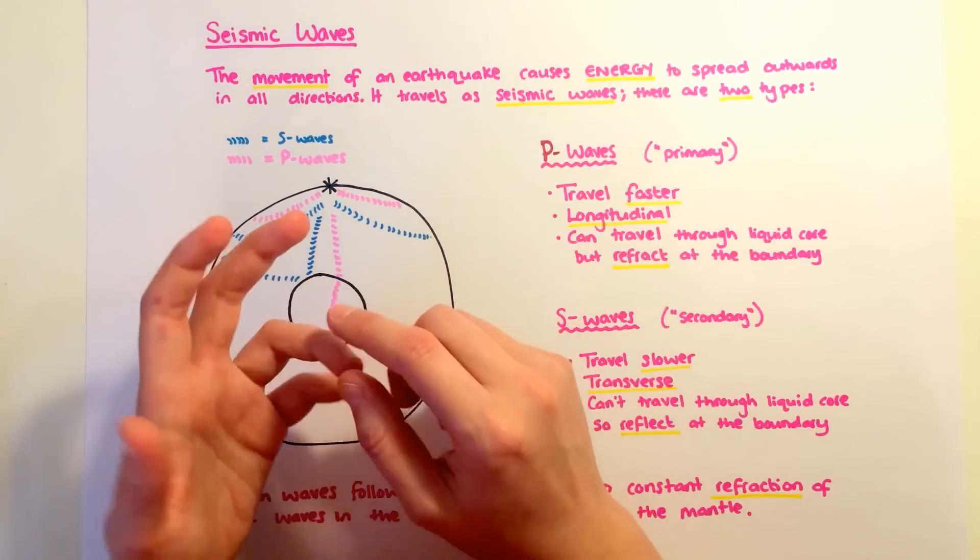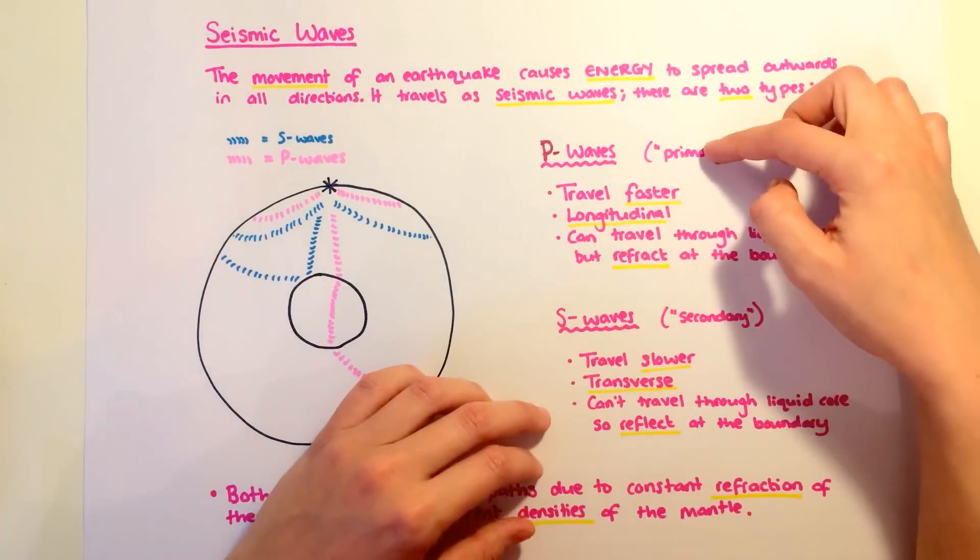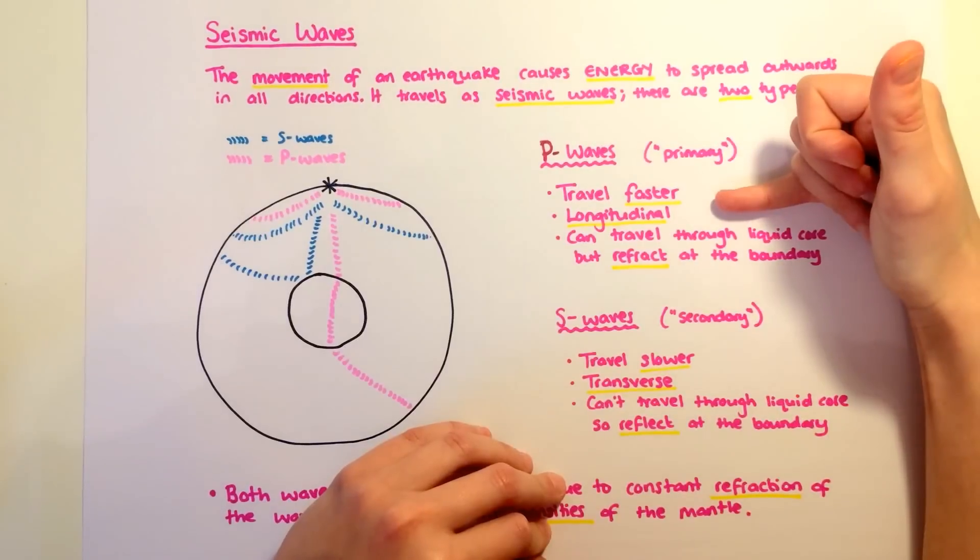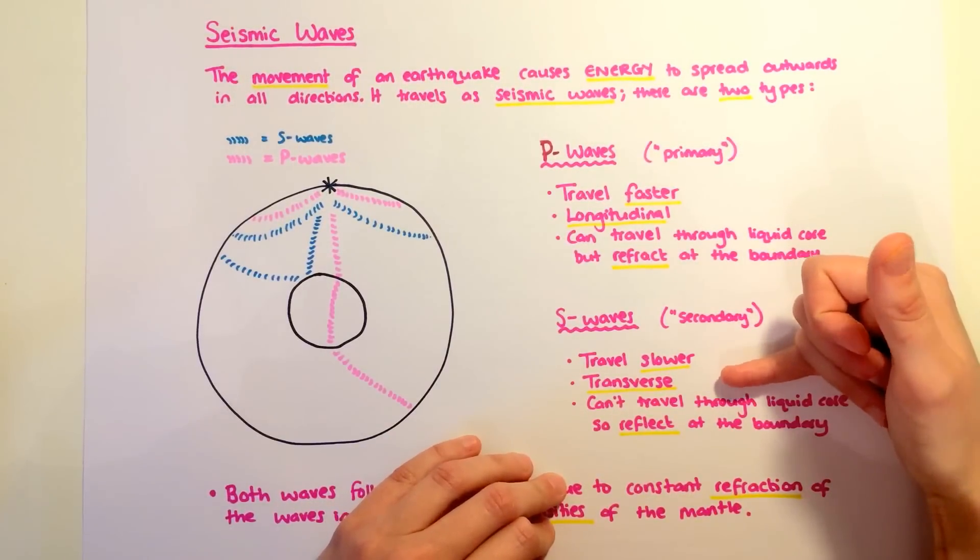The waves from an earthquake are known as seismic waves and there are two types, P waves and S waves. The P waves travel faster and they're longitudinal. The S waves travel slower and they're transverse.